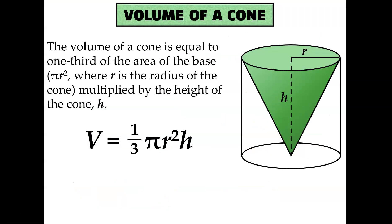The volume of a cone is also one-third of a cylinder with the same base and height. Just like the volume of a cylinder uses the same formula as the volume of a prism, it's the same thing with a cone — it is one-third the base times the height. It's just that the base is a circle, so you can rewrite that as pi r squared.